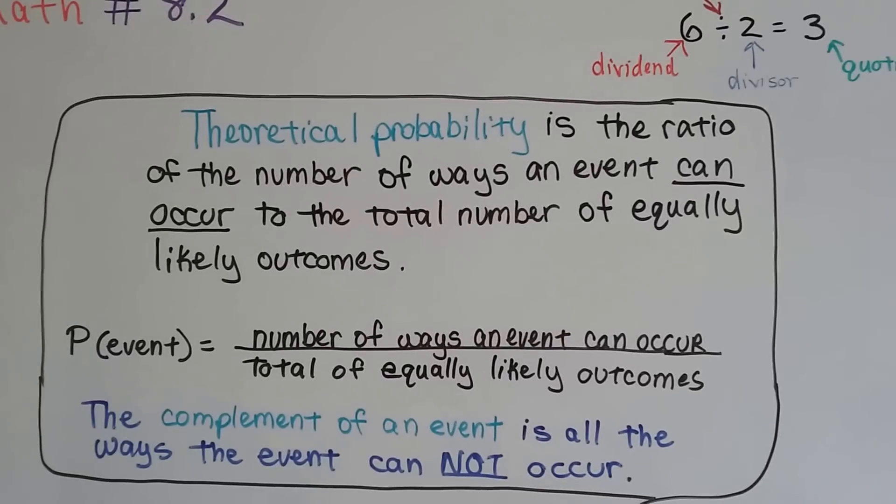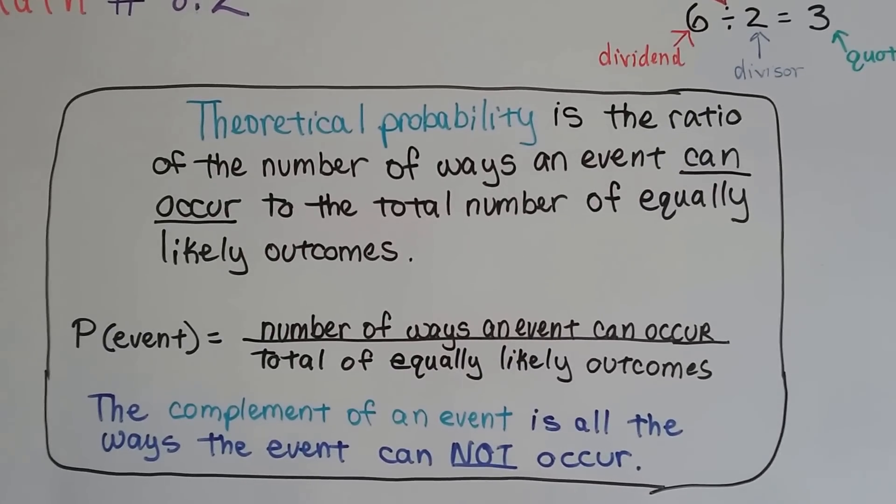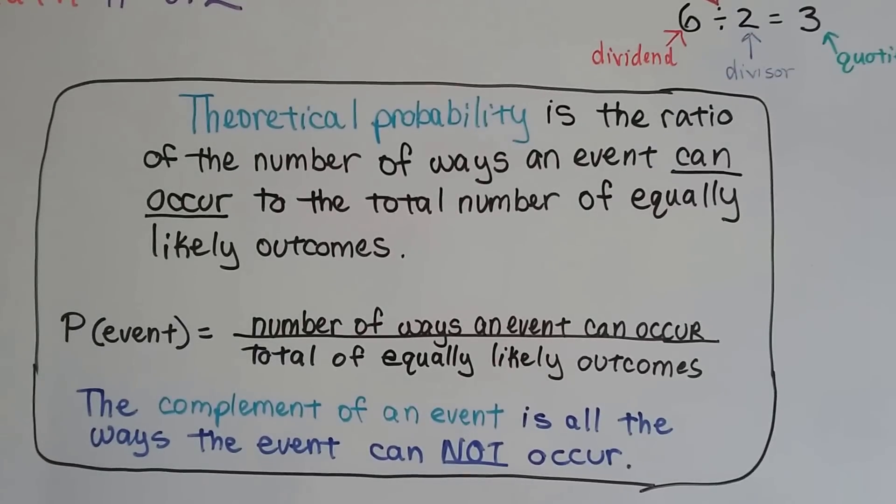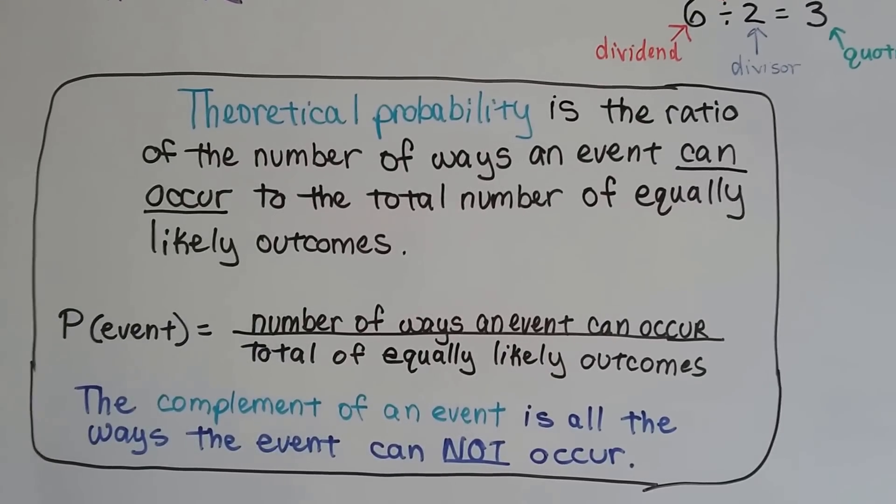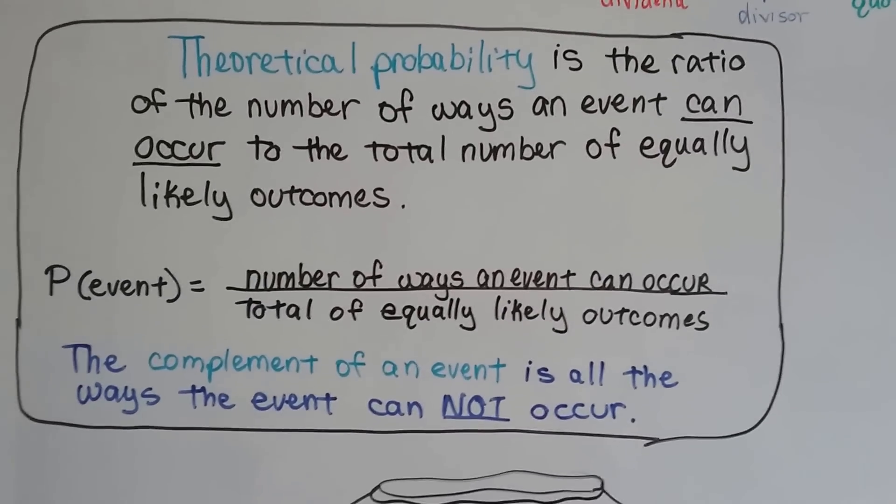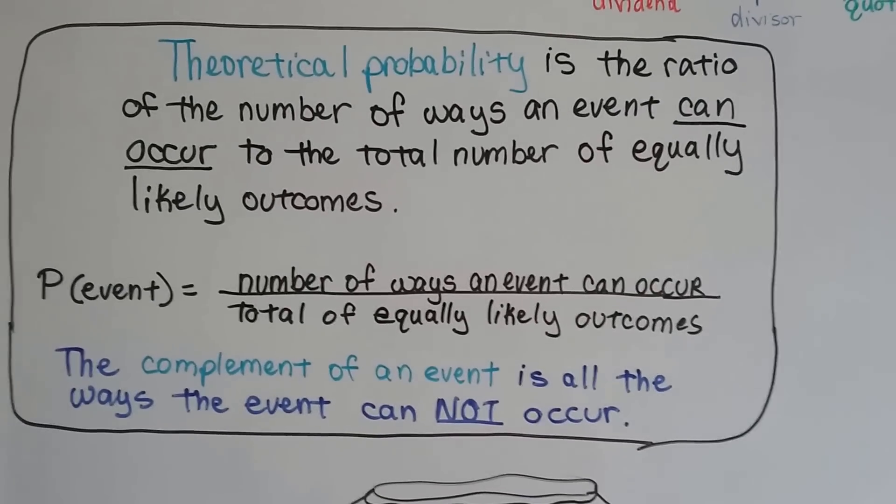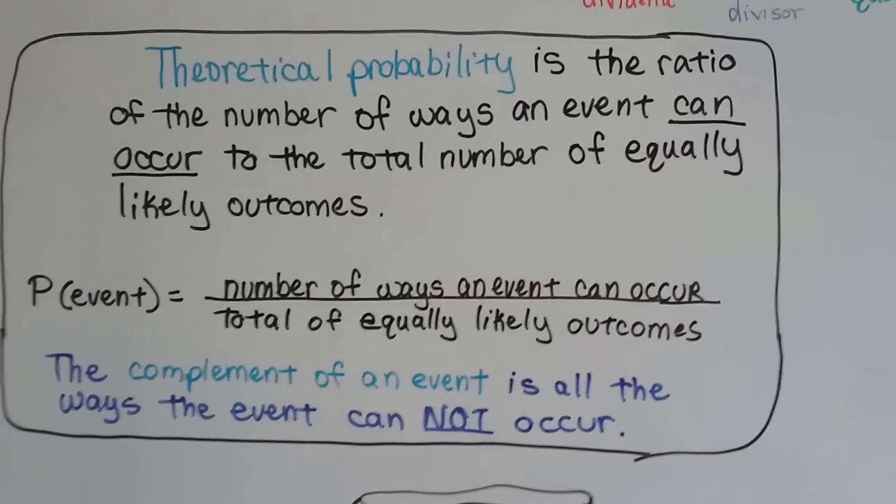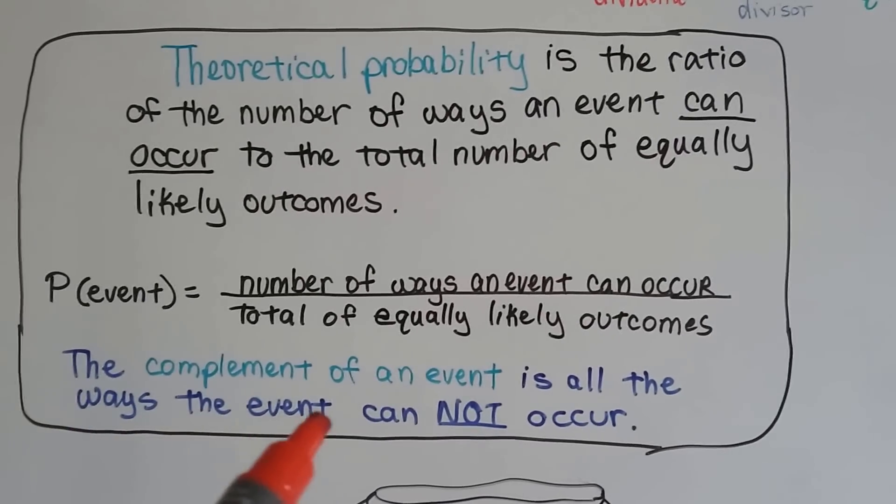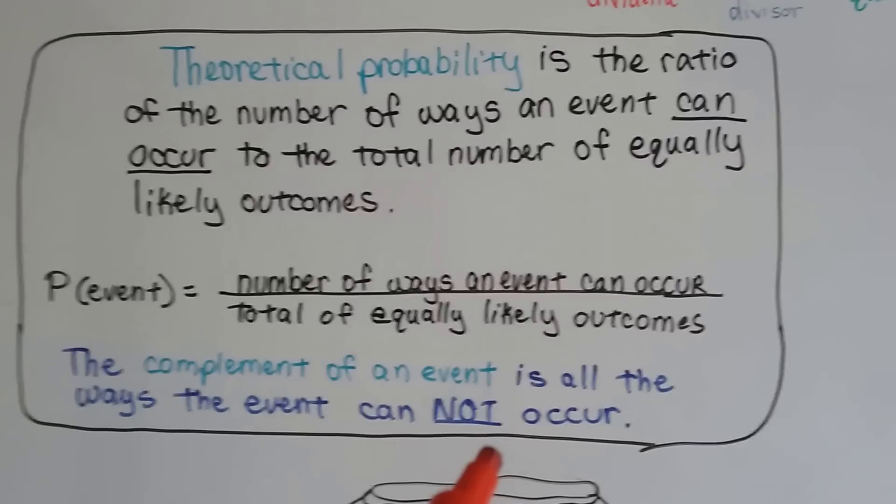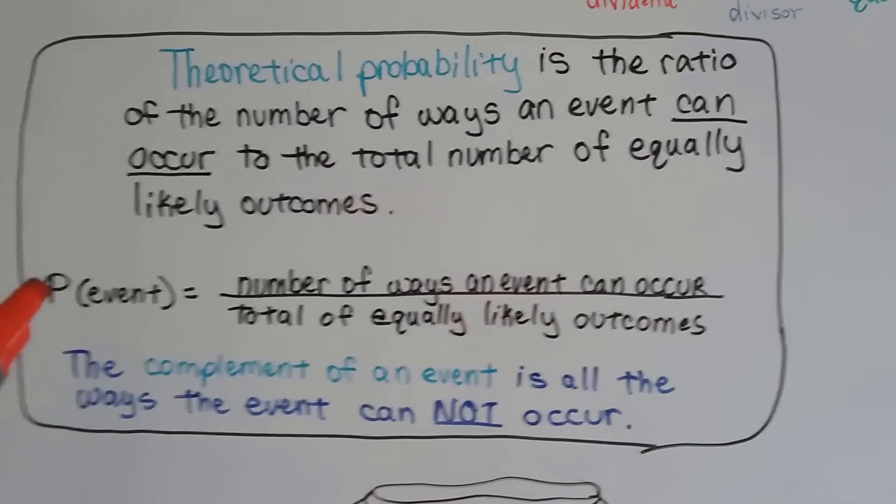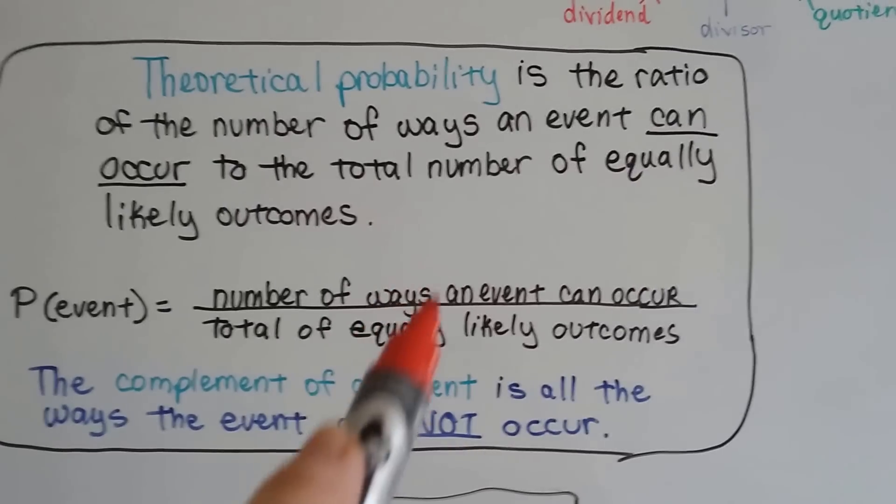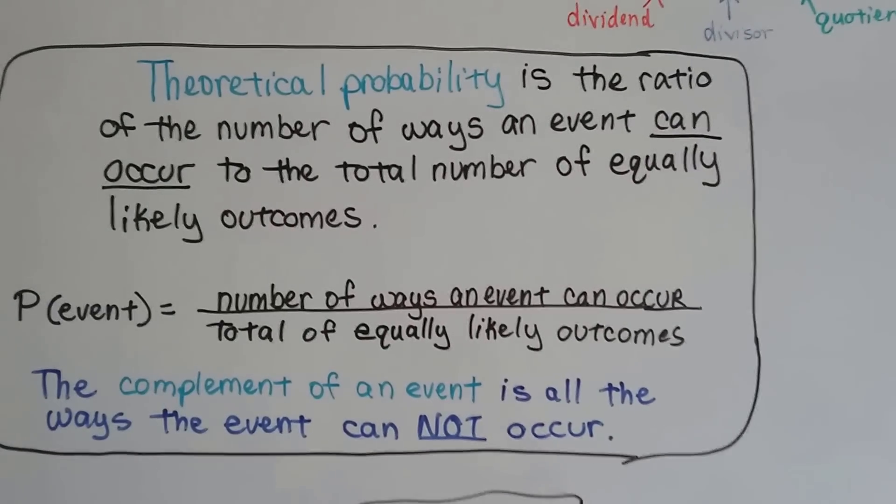This is finding probability without doing any physical work, just mental work. It's the ratio of the number of ways an event can occur to the total number of equally likely outcomes. So it's written as a fraction. The ways that it can occur would be the numerator, and the total of equally likely outcomes would be the denominator. The complement of the event is all the ways that it cannot occur. So P is probability, event is what we're trying to make happen, and then it's our ratio, our fraction.